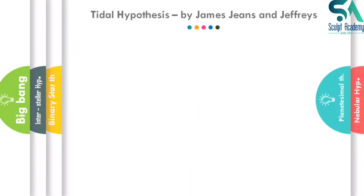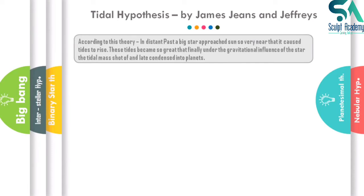Another theory that came into picture is the Tidal Hypothesis by James Jeans and Jeffries. This theory states that in the distant past, a big star approached the sun so closely that it caused tides to rise from the sun. These tides became enormously large, and finally, under the gravitational influence of the star, the tidal mass was shot off and later condensed into planets.